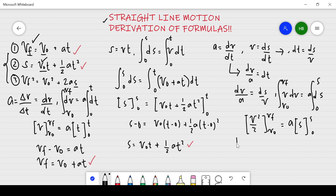You have one half vf squared minus v₀ squared is equal to as. Cross multiply and transpose the negative v₀ squared to the other side. You will have vf squared is equal to v₀ squared plus 2as. There you have it.